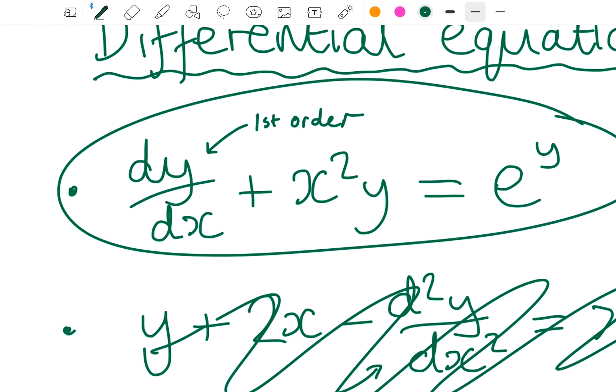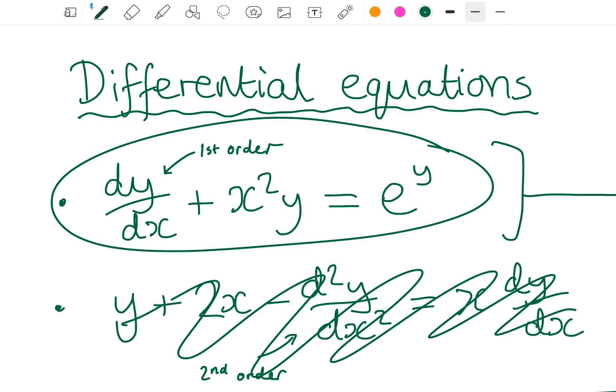So if you look here, what does that really mean? It means that you are trying to find an equation, a function in x, whose derivative plus x² multiplied by that function equals e to the power of that function of x.